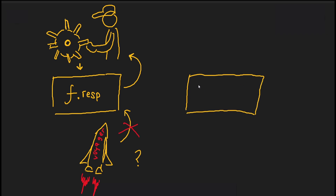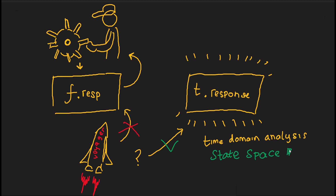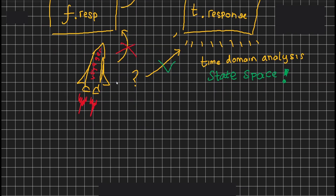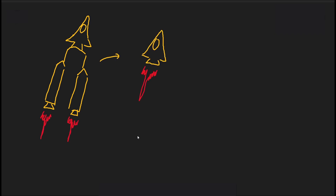The time domain analysis treats time as an independent variable in the analysis or measurement of time-dependent phenomena. One method based on the time domain analysis is the state space representation, which will be the topic of this video. The state space representation is a model that represents a system by its system variables and how the system behaves with respect to time. This method proved critical in engineering marvels such as rockets and aircraft, where processes like payload monitoring and thruster control required a control system that could adapt to changes with respect to time.